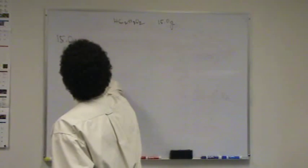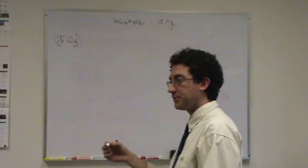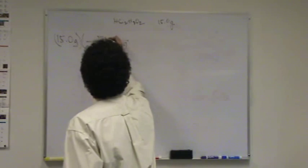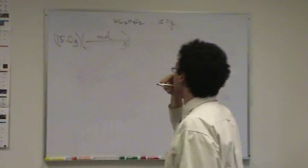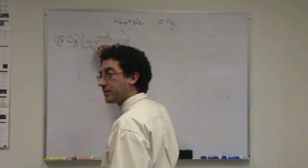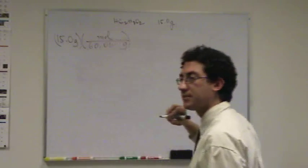15.0 grams of acetic acid. If I want to convert to moles, I have to use molar mass. I believe the molar mass, you calculate this from the periodic table, is 60.06.